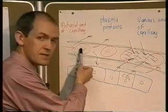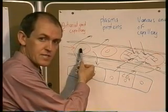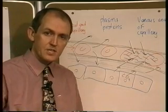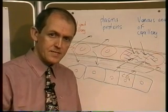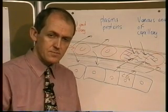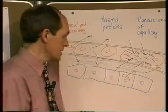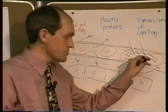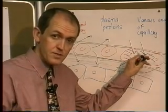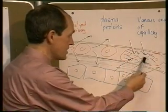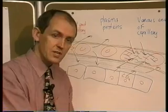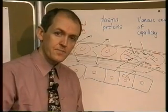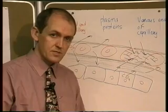At the arterial end of the capillary, hydrostatic pressure exceeds osmotic pressure, so fluid is extruded from the plasma into the tissue fluid. At the venous end of the capillary, because the hydrostatic pressure — the blood pressure — has dropped, the osmotic pressure is now greater than the hydrostatic pressure, so fluid is sucked back into the circulatory system.